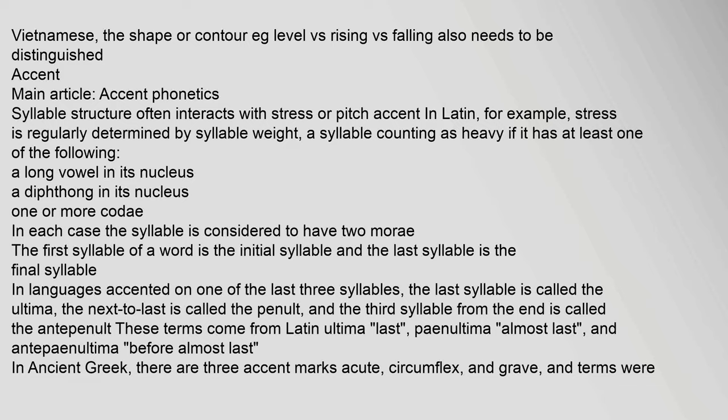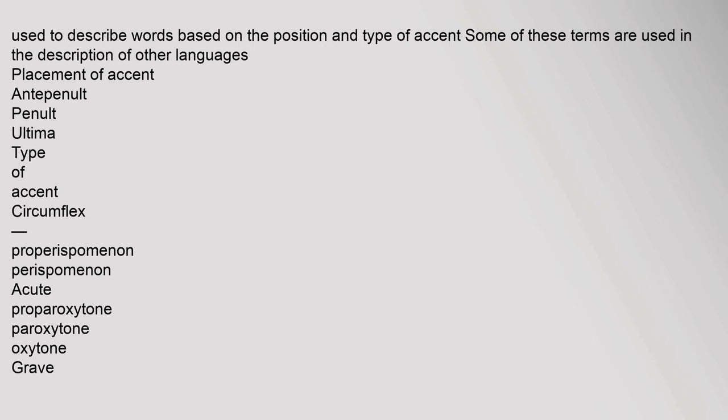A syllable is counted as heavy if it has at least one of the following: a long vowel in its nucleus, a diphthong in its nucleus, or one or more codas. The first syllable of a word is the initial syllable and the last is the final syllable. In languages accented on one of the last three syllables, the last syllable is called the ultima, the next-to-last is the penult, and the third from the end is the antepenult — terms which come from Latin.